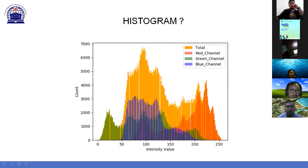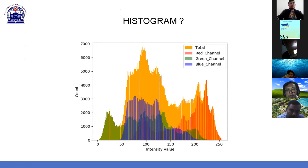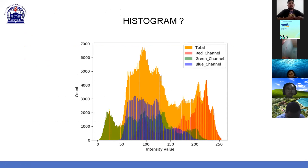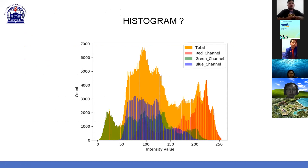Selanjutnya kita masuk ke histogram. Di mata kuliah ini ada istilah histogram dan histogram equalization. Histogram equalization itu bagaimana memperbaiki citra dengan membuat histogramnya rata. Tapi di pertemuan sekarang kita bahas dulu pengenalan histogram. Dari gambar ini ada gambaran histogram sebuah gambar dengan total, red channel, green channel, dan blue channel. Di sini ada istilahnya bar atau grafik batang.